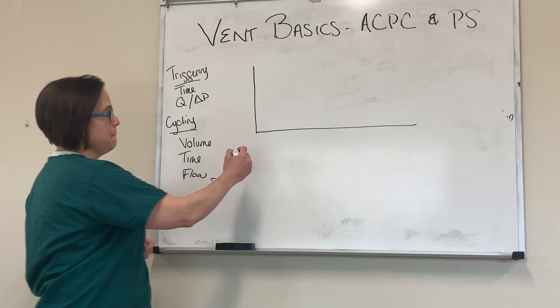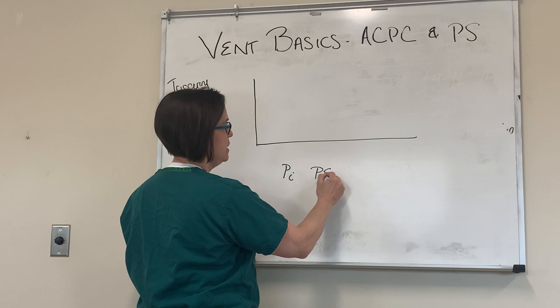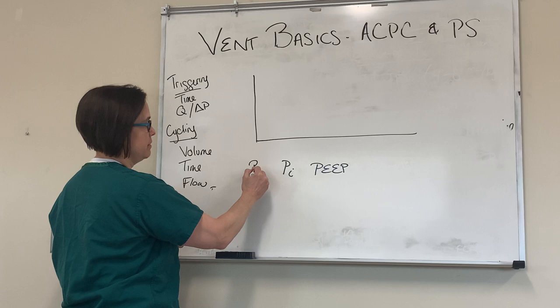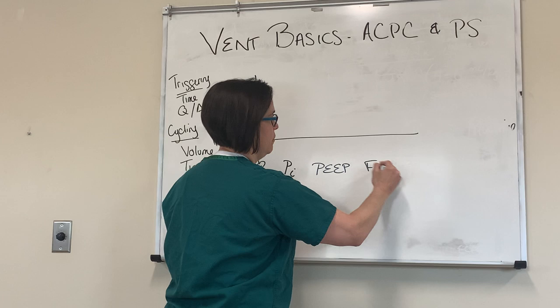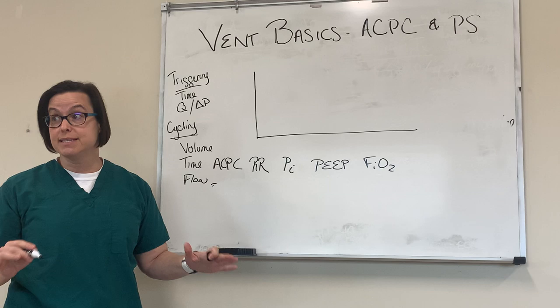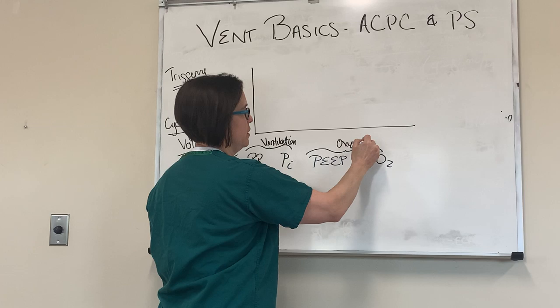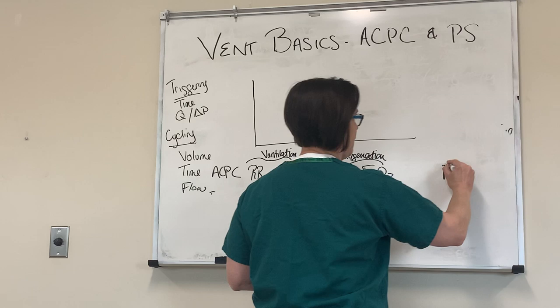You need to tell them what your pressures are — your PI and your PEEP. So that's my inspiratory pressure and my PEEP. You also need to give them a rate — a respiratory rate — and an FiO2. And we're always going to start with our mode. So: ACPC, respiratory rate, inspiratory pressure, PEEP, and FiO2. Just like with ACVC, the rate and inspiratory pressure are your ventilation parameters, and the PEEP and FiO2 are your oxygenation parameters. That's what the machine is going to do.